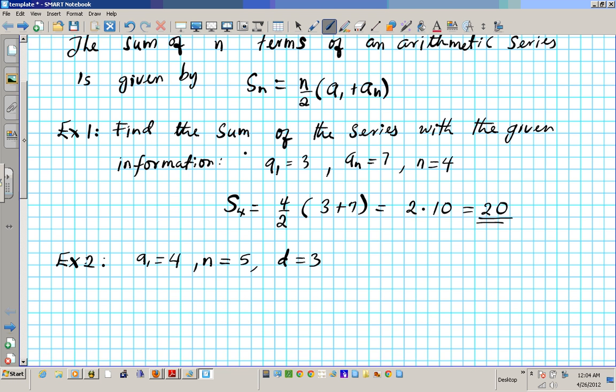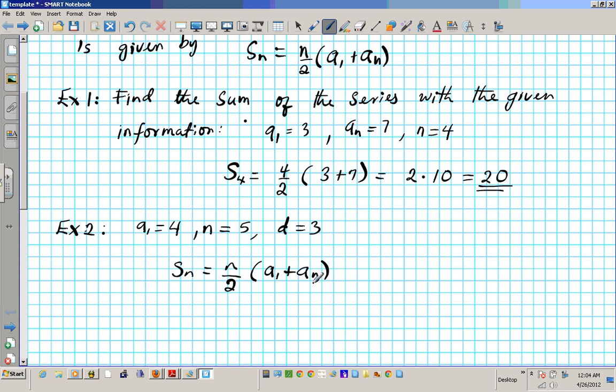So we want to compute the sum. We know that the sum formula S sub n is equal to n over 2 times a1 plus an. We know a1 and we know n, but we are missing a sub n, so we don't have enough information to use this formula. So in order to find what a sub n is, we need to resort to the other arithmetic sequence formula that we know, which is that an equals a1 plus (n minus 1)d.